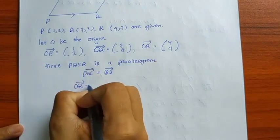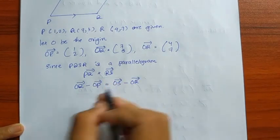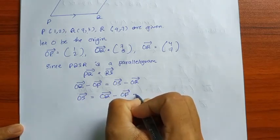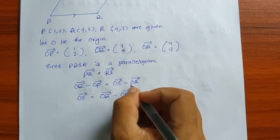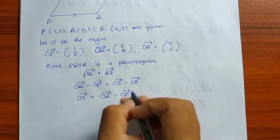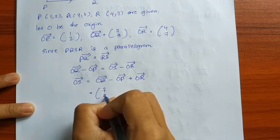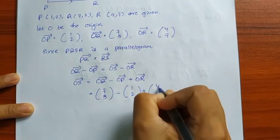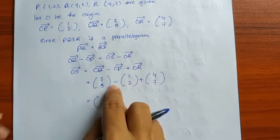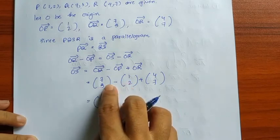Vector PQ: Beta O-Q minus Beta O-P. Vector RS: Beta O-S minus Beta O-R. So Beta O-S equals Beta O-Q minus Beta O-P plus Beta O-R. O-Q is 7,3; minus O-P which is 1,2; plus O-R which is 4,7. So 7 minus 1 plus 4 equals 10; 3 minus 2 plus 7 equals 8. Therefore S has coordinates 10, 8.